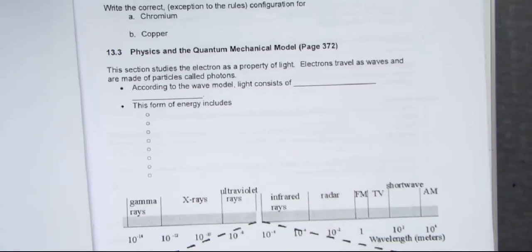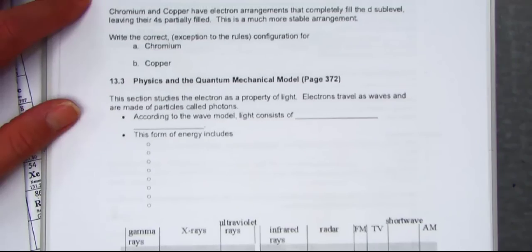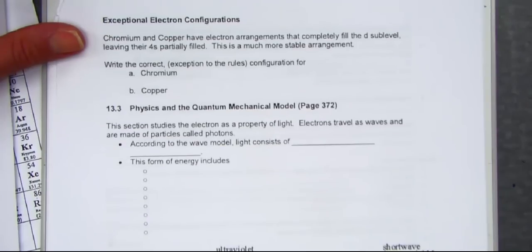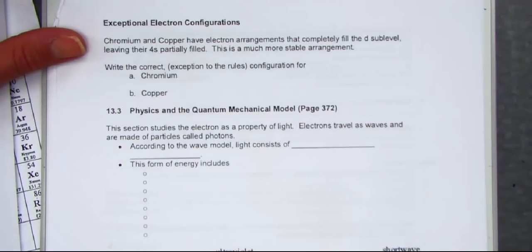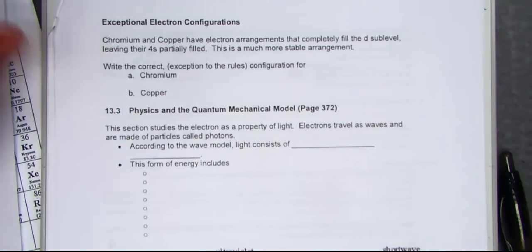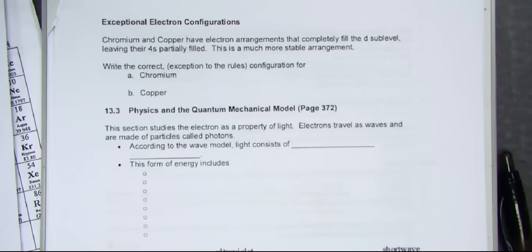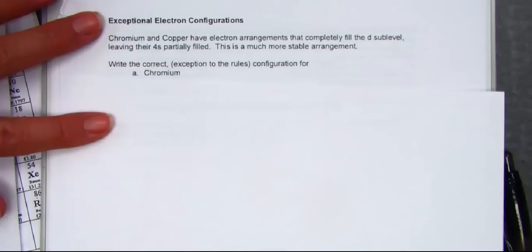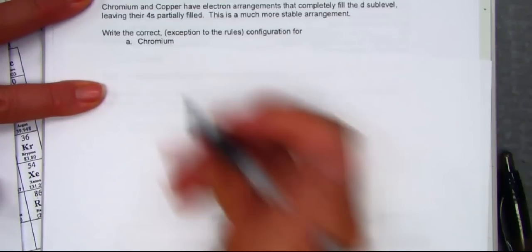So, my note pack is opened up here to page 5, where the top of the page says exceptional electron configurations. Perhaps what I'd like to do is use some scrap paper, and that way I can write larger than the room given to me in my note pack. Let's take a look at chromium first.